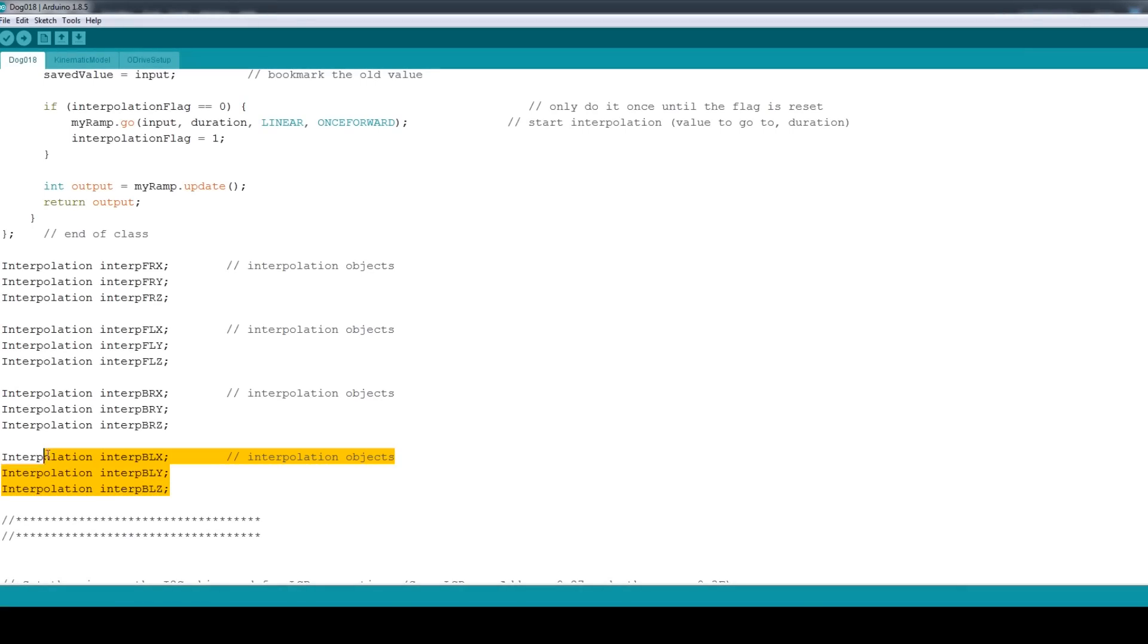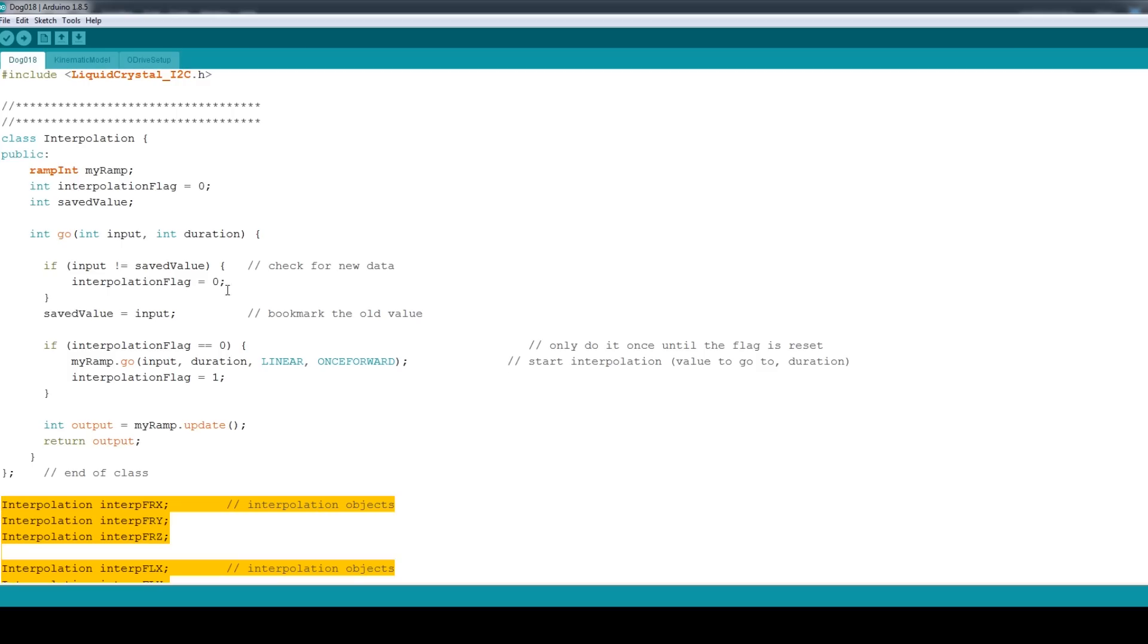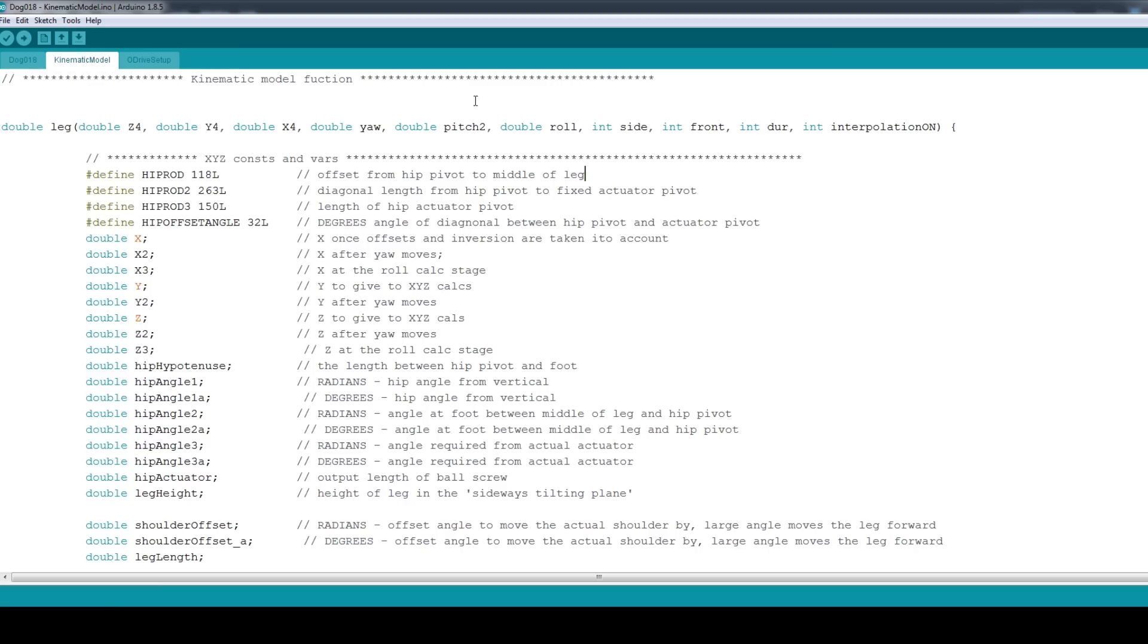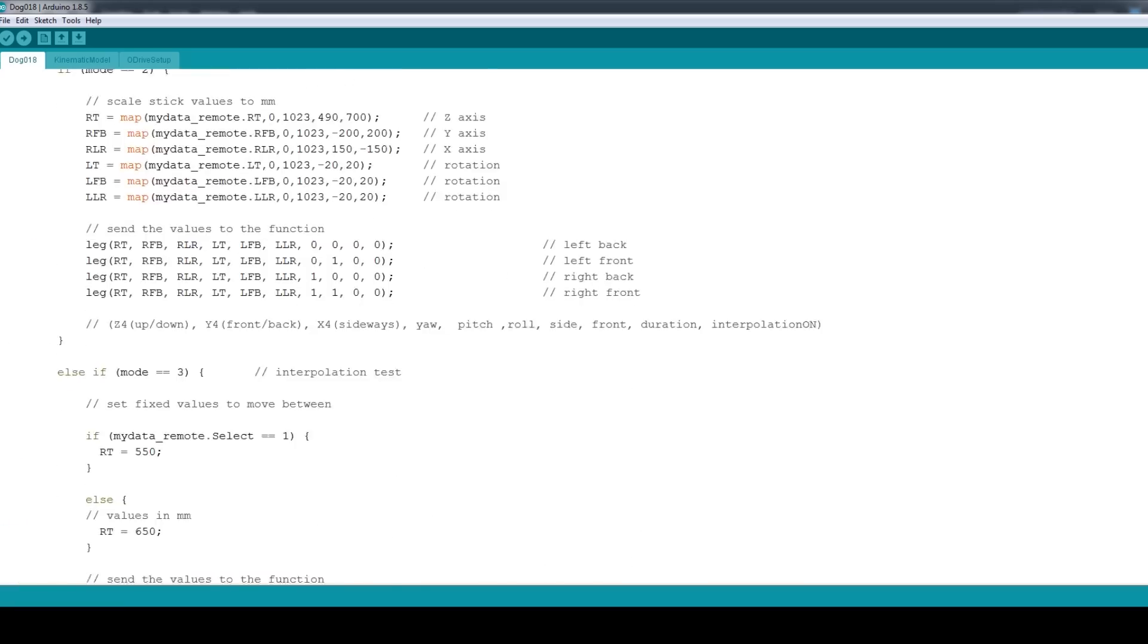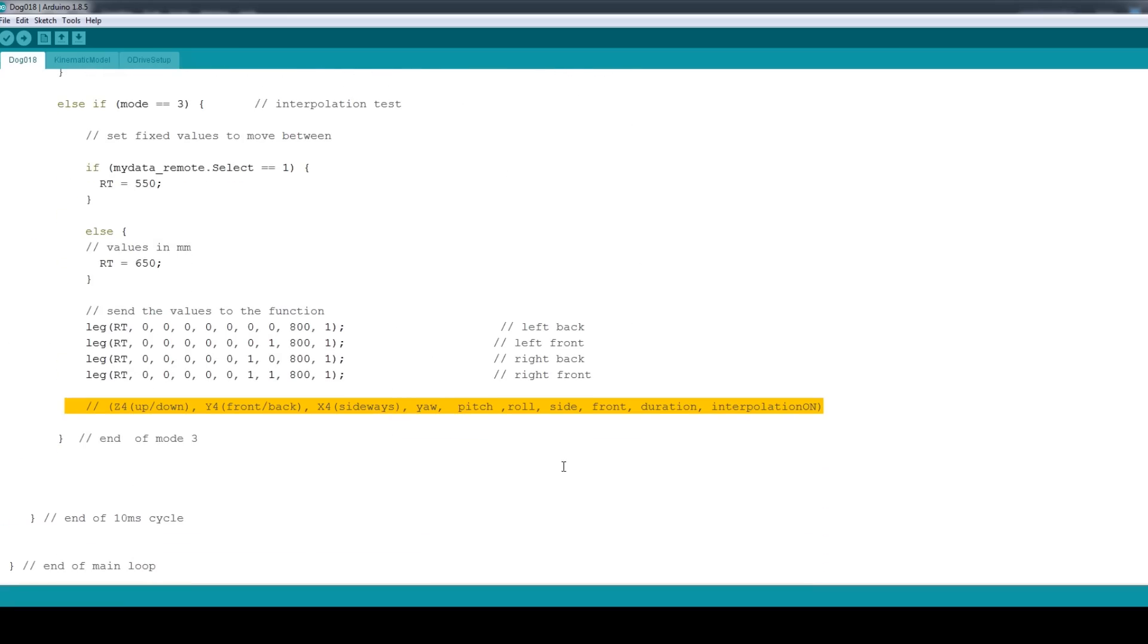So I've now created my 12 interpolation objects which is three per leg. We've still got that one class which does exactly what it did before though. The kinematic model function now takes some extra arguments. It takes the duration for that interpolation to occur and it takes a flag of whether interpolation is used or not. Further down that function if interpolation is used then we interpolate those values and it identifies which leg it is with these variables which are passed in as arguments to this function to determine which leg it is and use the correct three objects to create that interpolation for the three axis on each leg.